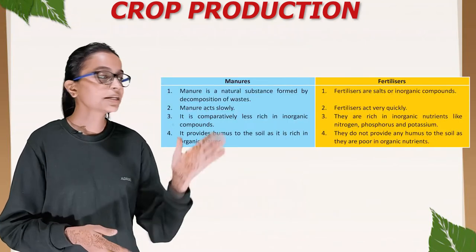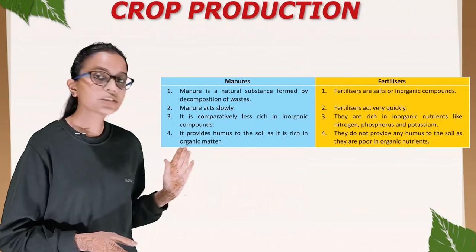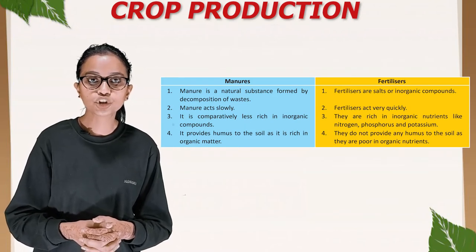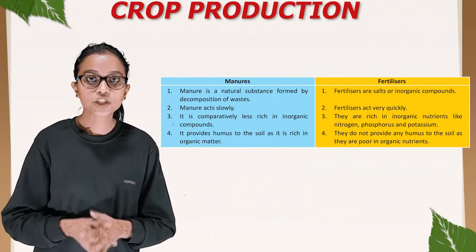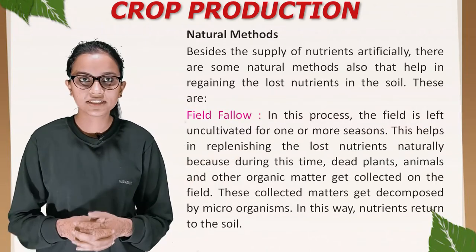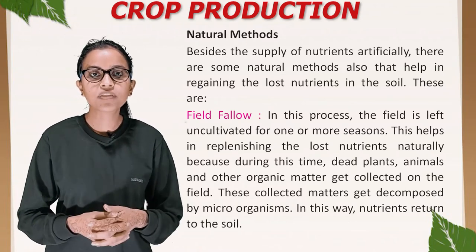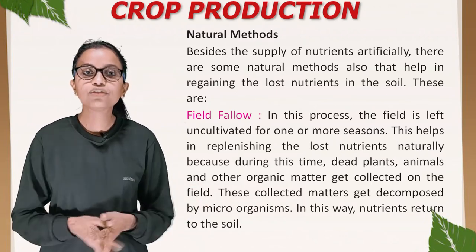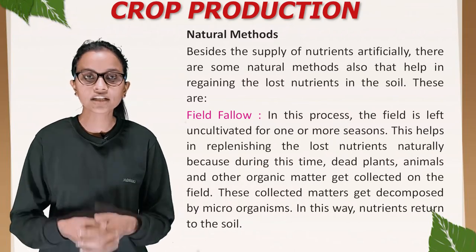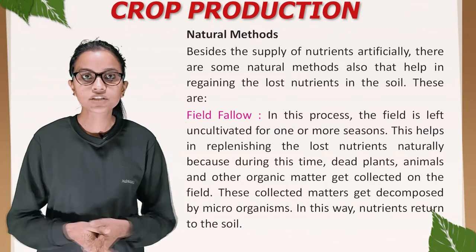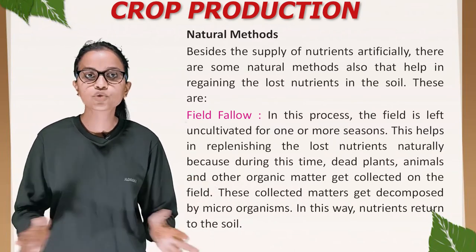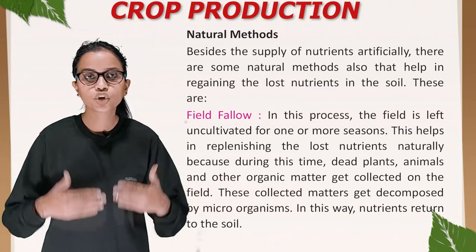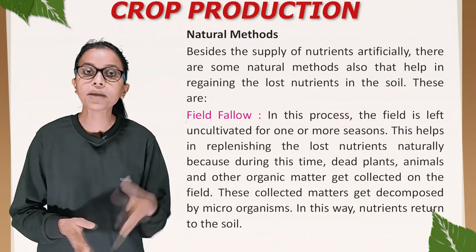This table shows the differences between manures and fertilizers. Manure is a natural substance formed by decomposition of wastes, while fertilizers are salts or inorganic compounds. Besides supplying nutrients artificially, there are natural methods to retain lost nutrients in the soil. Field fallow: the field is left uncultivated for one or more seasons, which helps replenish lost nutrients naturally because during this time dead plants, animals, and other organic matter get collected and decomposed by microorganisms, returning nutrients to the soil.